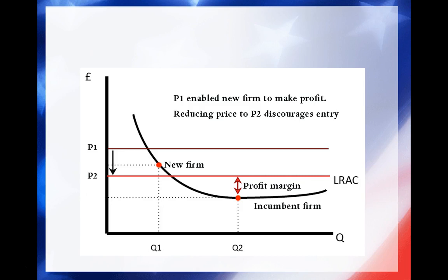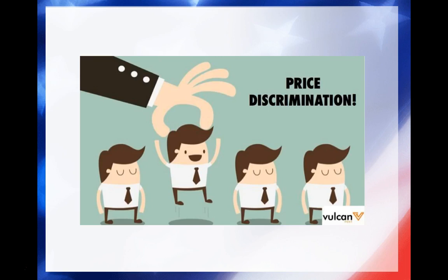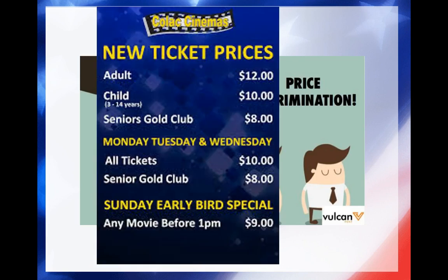Price discrimination is differential pricing for goods and services that are not justifiable by the difference in production costs. The best example of this is movie tickets. When you go to the movie, the movie costs the same price to run, but there are three different prices based on when you were born: $8, $10, or $12. There is no difference in how the movie was made or what it takes to show the movie. The only thing is to bring people in by lowering prices for certain populations. That is price discrimination.